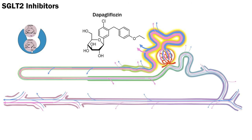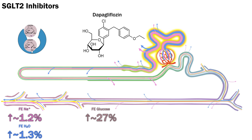SGLT2 inhibitors like dapagliflozin mainly cause glucosuria — increasing fractional excretion of glucose from almost zero to around 27% in euglycemic patients, and up to 60% in hyperglycemia as glucose reabsorption mechanisms are already overwhelmed. Large glucosuria can work as an osmotic diuretic similar to mannitol, as seen in poorly controlled diabetes. As they work very proximally with other mechanisms for sodium and water reabsorption, the overall natriuretic and diuretic effect is small, with an absolute increase of about 0.4% — amplified to around 1.7% if the patient is already taking a loop diuretic. Adverse effects include euglycemic DKA in type 2 diabetics and increased risk of urinary tract infection and Fournier's gangrene in some populations.